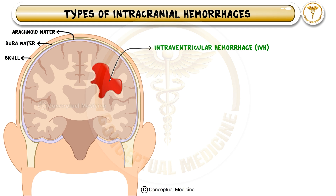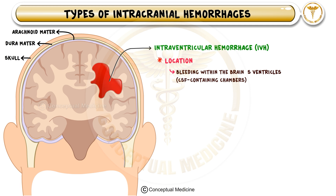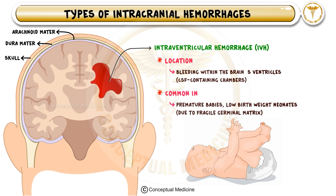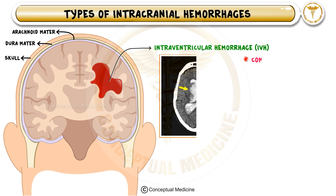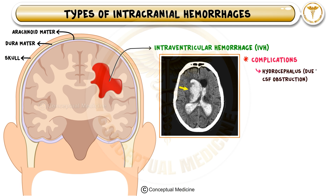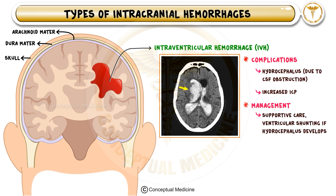Intraventricular hemorrhage (IVH) occurs when bleeding extends into the brain's ventricular system, which contains CSF. This type of hemorrhage is commonly seen in premature babies due to their fragile germinal matrix, but it can also occur in adults with hemorrhagic strokes or trauma. A major complication of IVH is obstructive hydrocephalus, where blood clots block the outflow of CSF, leading to increased intracranial pressure. Management focuses on supportive care, ventricular drainage, and sometimes ventriculoperitoneal (VP) shunting if hydrocephalus develops.